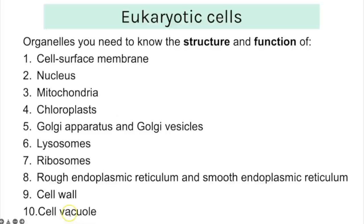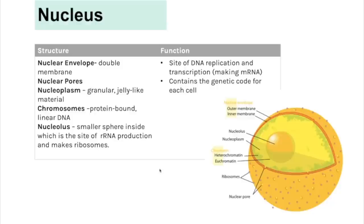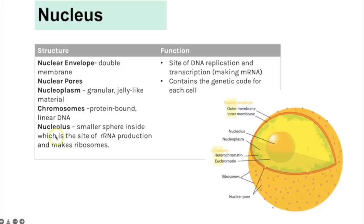Within eukaryotic cells, the key organelles you need to know the structure and function of are listed here — we'll go through each one. The nucleus: key structures include the nuclear envelope, nuclear pores, nucleoplasm, chromosomes and the nucleolus. The overall function of the nucleus is that DNA replication occurs there, it's a site of transcription where mRNA is made, and it contains the DNA which is the genetic code for the cell. The nucleolus is the site of RNA production and where ribosomes are made.